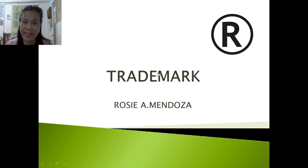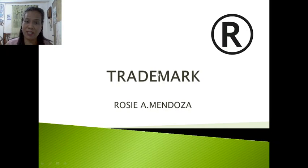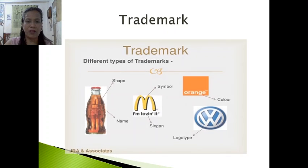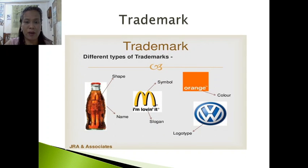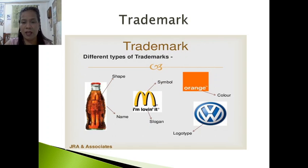Welcome everyone to lesson three, which is all about trademark. Trademark is still under intellectual property rights. There are types of trademarks associated with different elements such as the shape, the product name — for instance, Coca-Cola — the symbol, the slogan, the color, and the logotype. Those are the different types of trademarks we'll discuss.